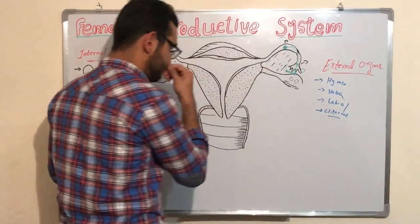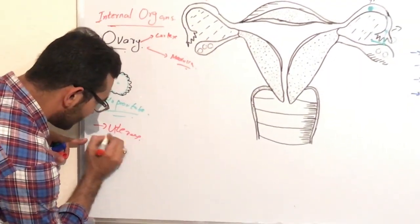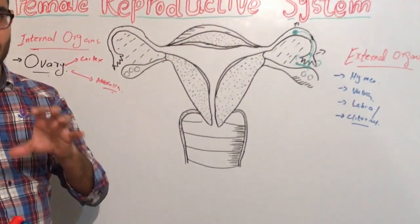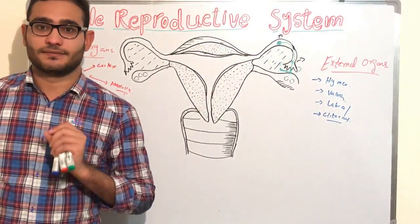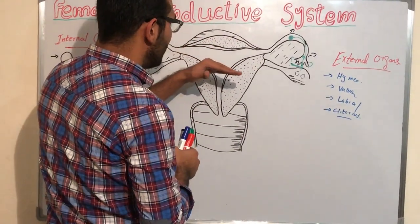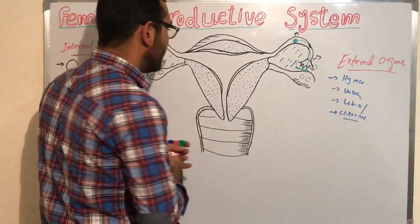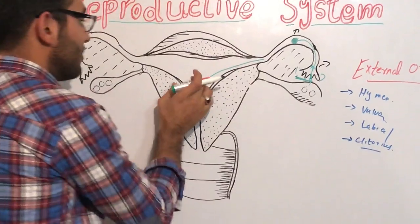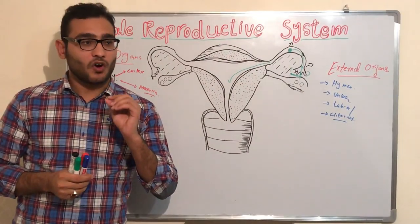Now we will discuss the uterus. The uterus consists of mainly three parts. The upper part, above the fallopian tube, is known as the fundus. Then there is the body, and the last part is known as the cervix. The cavity inside the uterus where the zygote implants is known as the uterine cavity. The uterus is made up of three main layers.